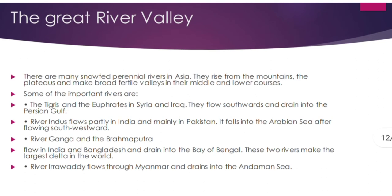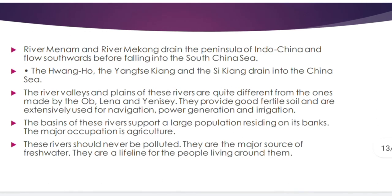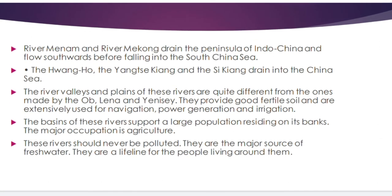The Great River Valley: there are many snow-fed perennial rivers in Asia. They rise from mountains and plateaus and make broad fertile valleys in their middle and lower courses. Some important rivers are the Tigris and Euphrates, which flow through Syria and Iraq. River Indus flows partly in India and mainly in Pakistan. River Ganga, River Brahmaputra, River Irrawaddy, River Hwang Ho, River Menam, and River Mekong are also important rivers of Asia. These rivers are major sources of fresh water and are a lifeline for the people living around them.